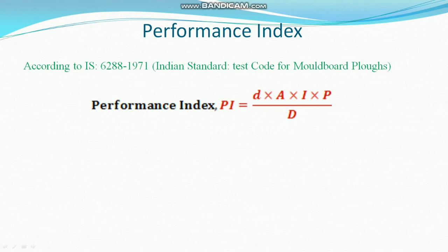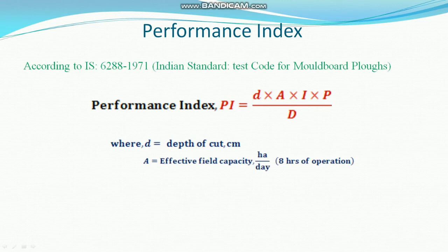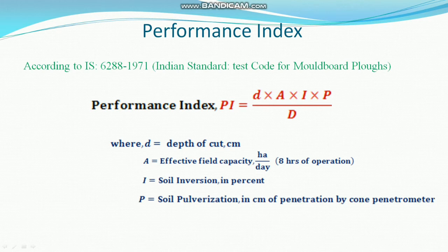The performance index PI equals D times A times I times P divided by draft, where D is depth of cut in centimeters, A is effective field capacity in hectares per day, I is soil inversion in percent, P is soil pulverization in centimeters of penetration by cone penetrometer, and D (draft) is the draft of the implement in kgf per centimeter squared, also called unit draft.